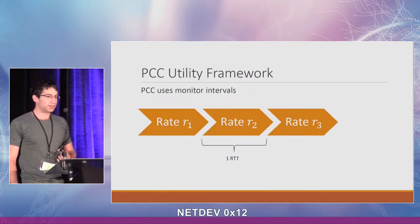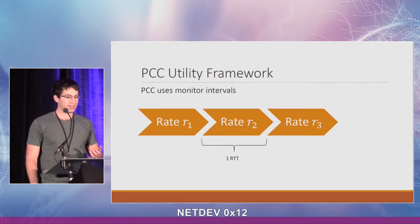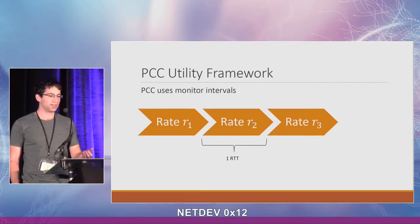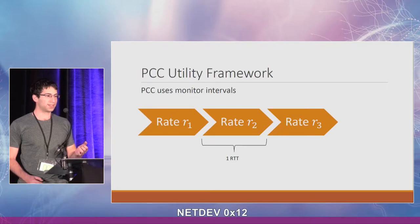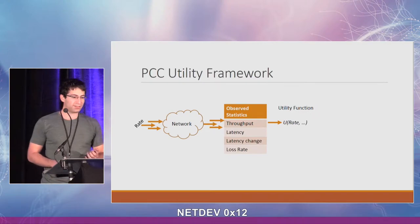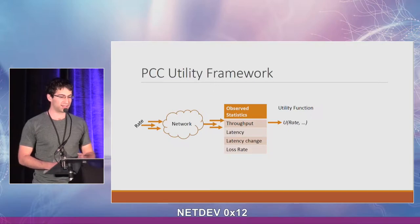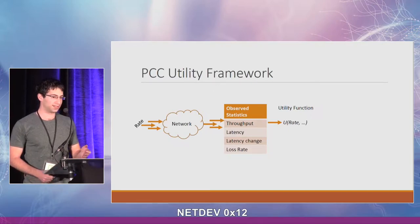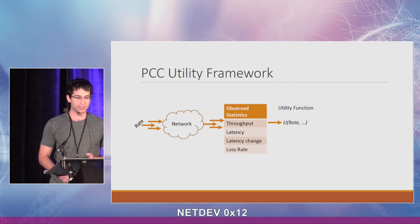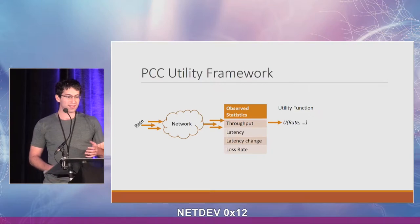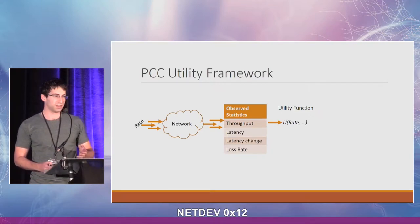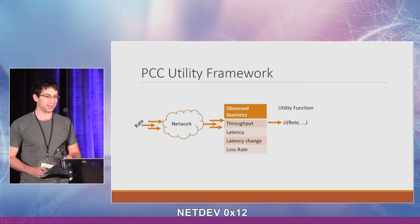PCC uses monitor intervals. Each interval is about one RTT long and corresponds to a single sending rate. In each interval, PCC observes the network's reaction to this sending rate. It looks at these parameters: throughput, latency, change in latency, and loss rate. With these statistics it calculates the utility of this sending rate.